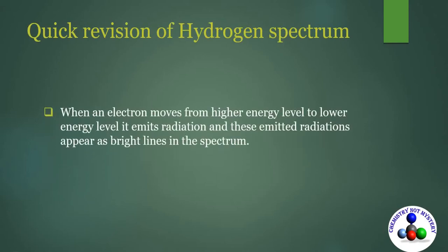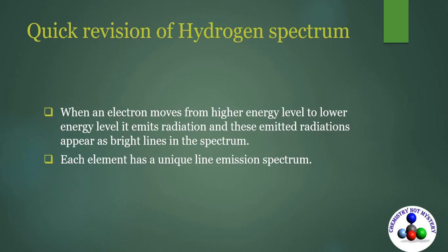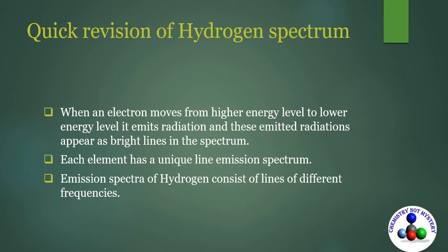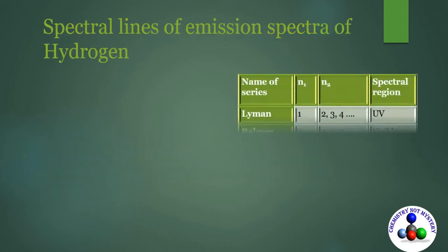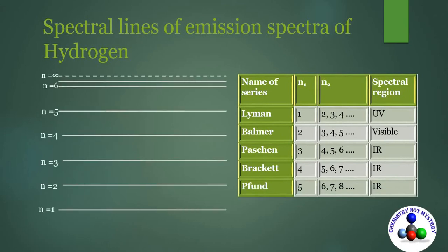When an electron moves from a higher energy level to a lower energy level, it emits radiation and these emitted radiations appear as bright lines in the spectrum. Each element has a unique line emission spectrum. Emission spectra of hydrogen consist of lines of different frequencies. When the electron returns to the first level from any higher level, it emits high energy UV radiation and the lines in this region are named as the Lyman series.